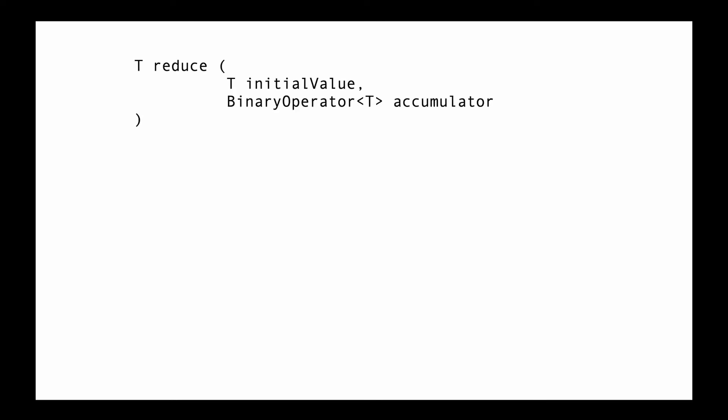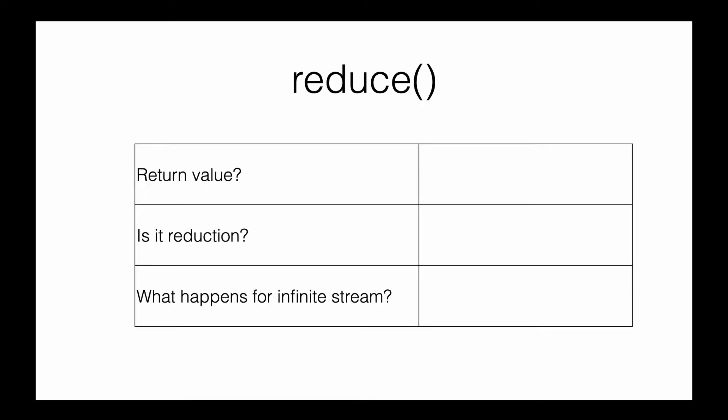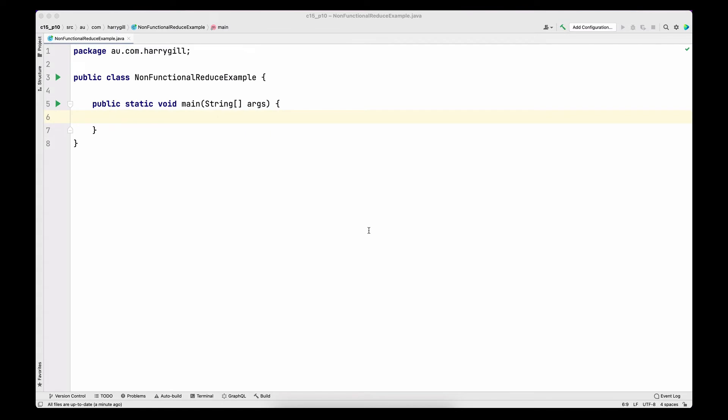The reduce method comes in three flavors. The first one takes two arguments: an initial value and an accumulator. The second version just takes the accumulator — no initial value required. The third version takes the initial value, an accumulator, and also a combiner. We will look into all three in this video, answering three key questions just like with other terminal operations. Let's jump into IntelliJ and look at the examples.